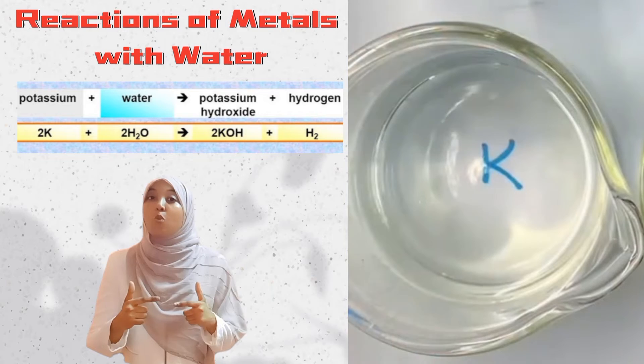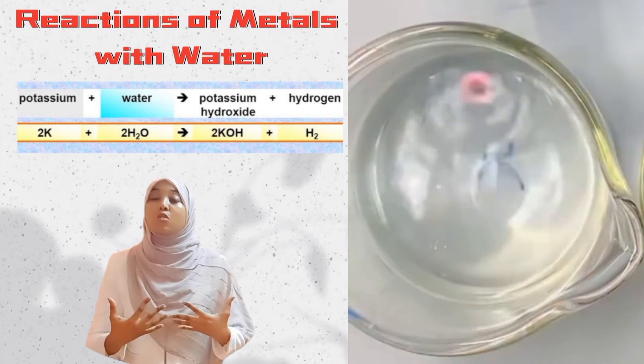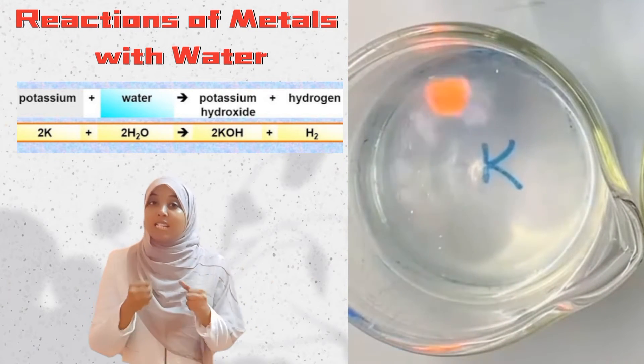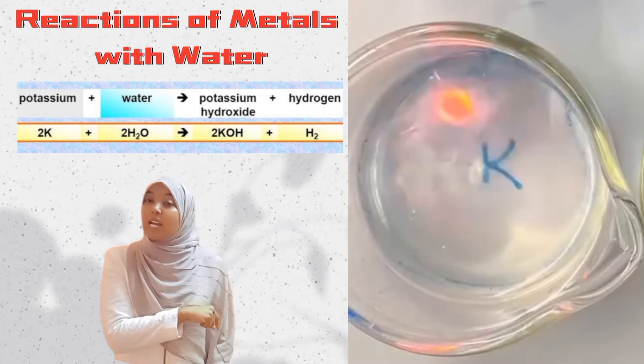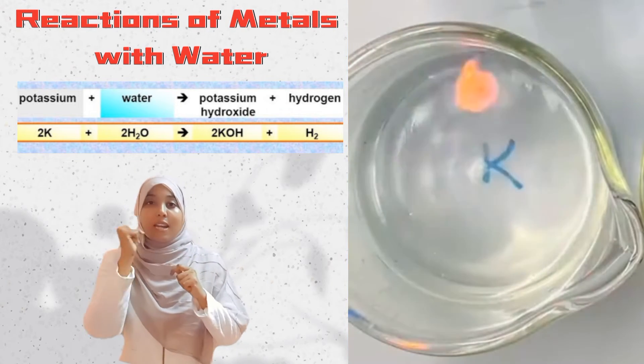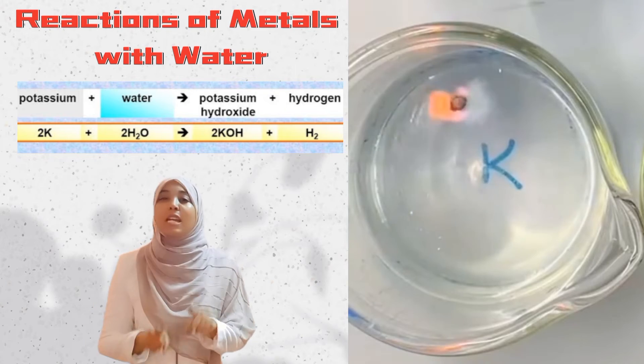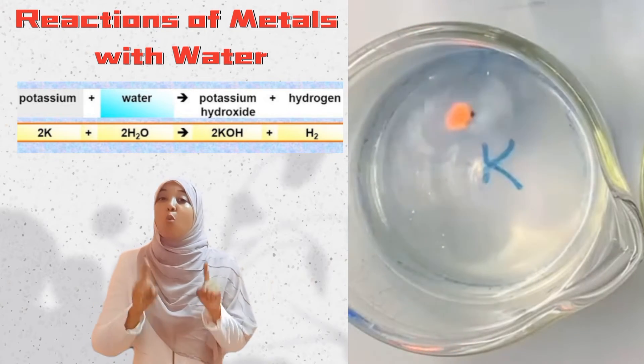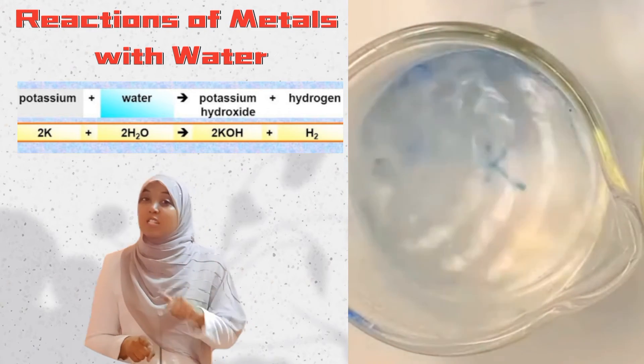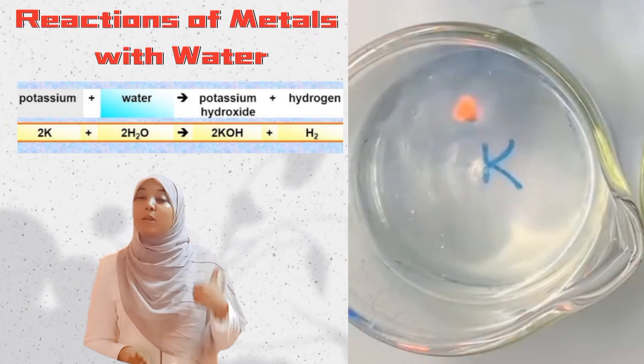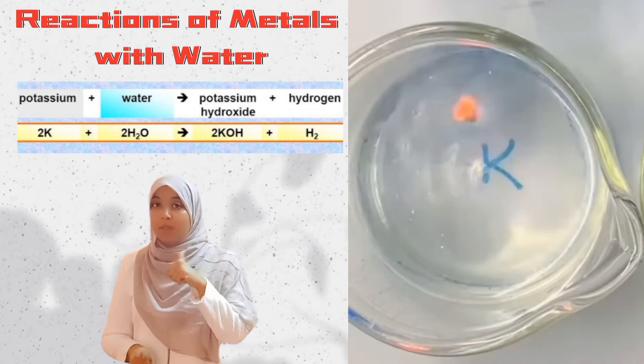Hydrogen gas does not burn with a lilac flame. The reason we're seeing this color is because of the presence of potassium vapor.